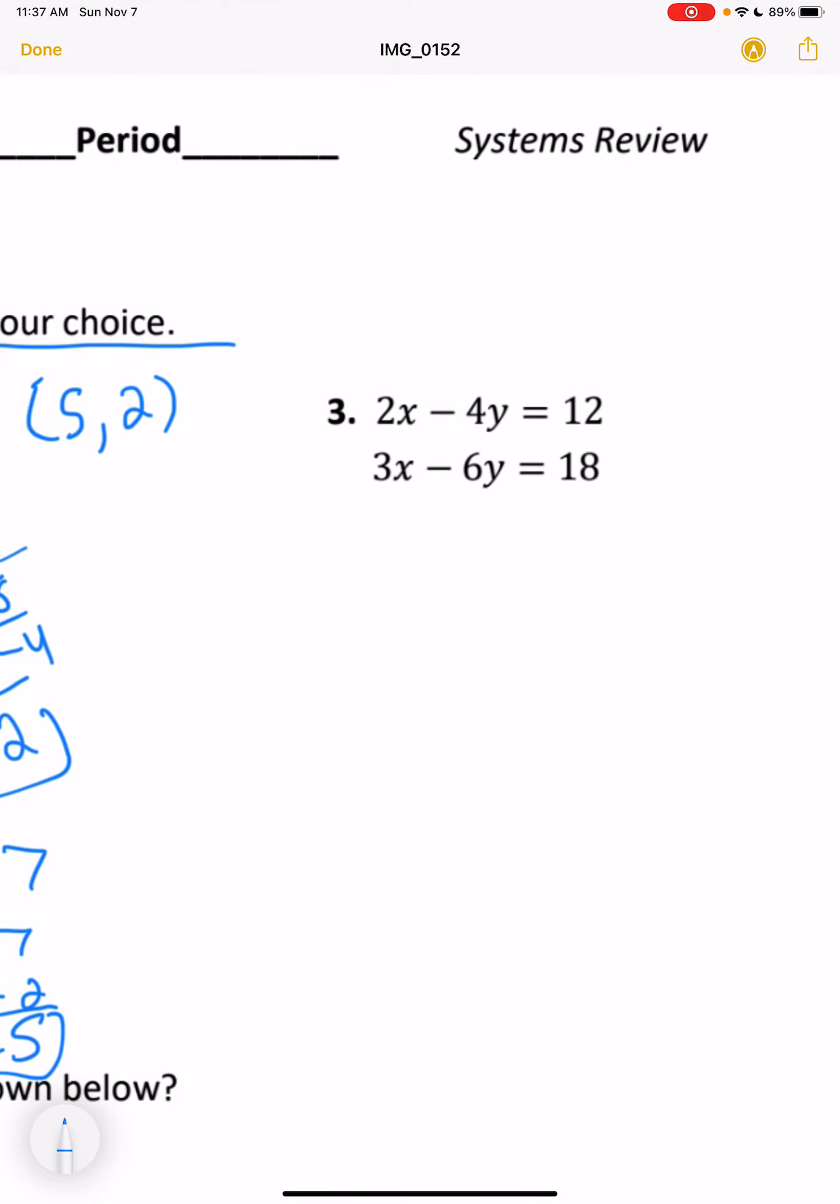Our last one is another situation where I would definitely go for elimination. We can multiply. There's nothing I can multiply the top and the bottom by to get something to cancel out. So we will need to multiply both equations.